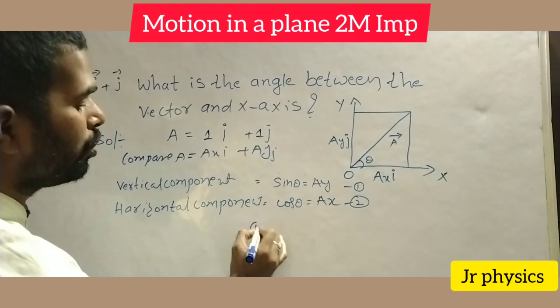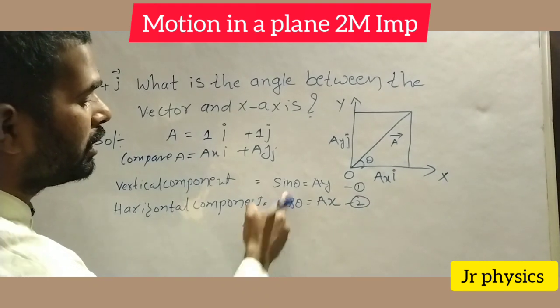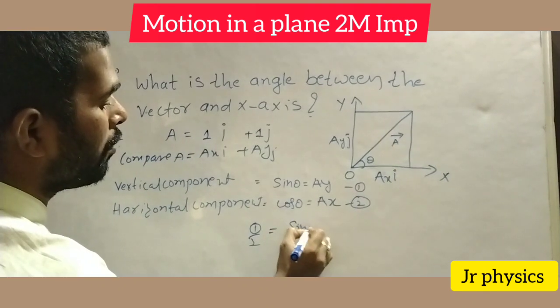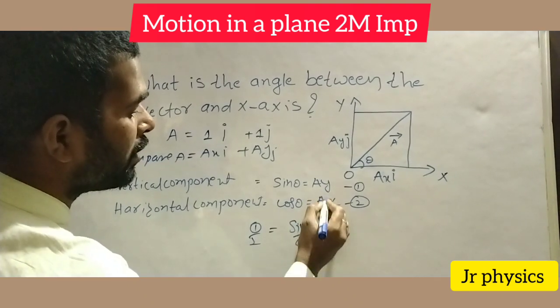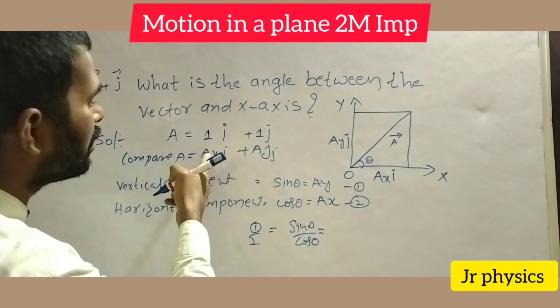Equation 1 by 2, do equation 1 by 2. Here, sin theta by cos theta is equal to ay by ax.